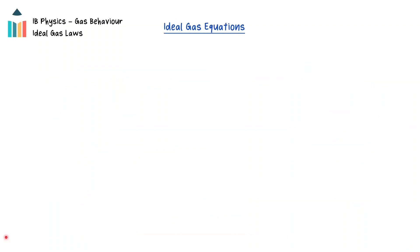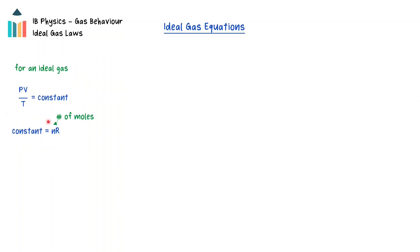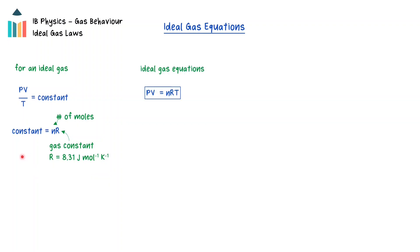The previous four gas laws can be combined together to show that for an ideal gas, the ratio of the pressure times the volume to the temperature is a constant, with the constant equal to n times R, where n is the number of moles of the gas and R is the gas constant. R is equal to 8.31 joules per mole Kelvin. These combine to form the ideal gas equation, or the equation of state for an ideal gas: the pressure times the volume is equal to the number of moles times the gas constant times the temperature.